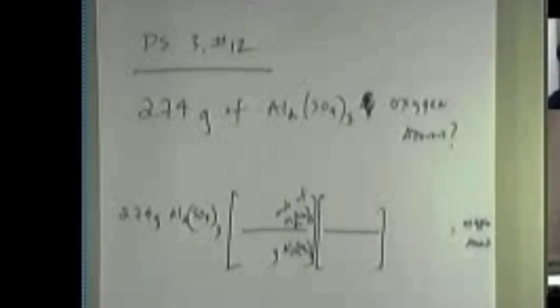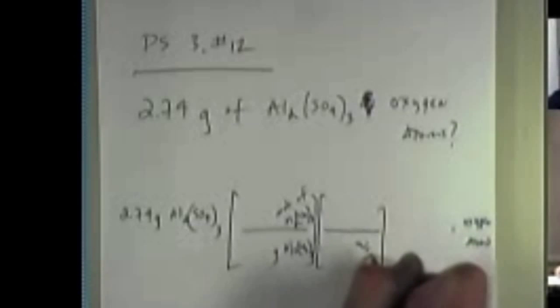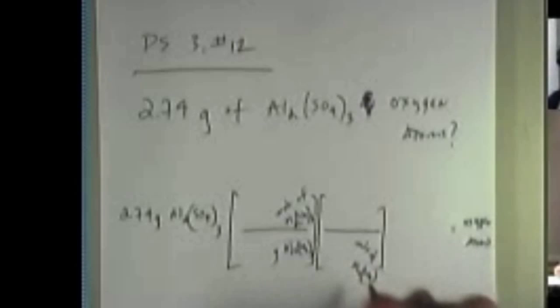What should I put in the denominator of units? Moles of what? Aluminum sulfate, right? So I'm going to write down moles of aluminum sulfate in the denominator. We're eventually trying to get to oxygen atoms, right? Is there some way I can relate moles of aluminum sulfate to something that might get me closer?